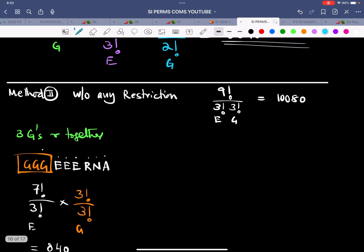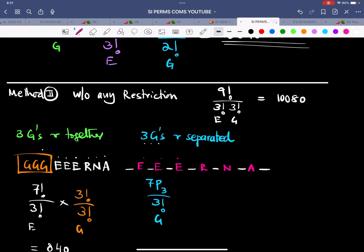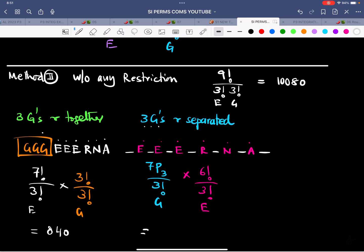What if there is a possibility that 3 G's are separated? Let's separate out the 3 G's. How many letters are there? Altogether 9, therefore there will be 7 spaces. So there are 3 E's, R, N, and A, and the spaces are one through seven. In these 7 we have to fit in the 3 G's. So therefore 7P3, but 3 G's are identical, divided by 3 factorial. What about these 6 alphabets? They can arrange themselves in 6 factorial ways divided by 3 factorial for the E's. This answer is 4200.